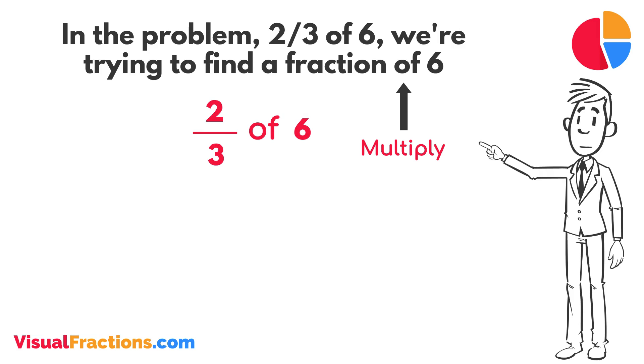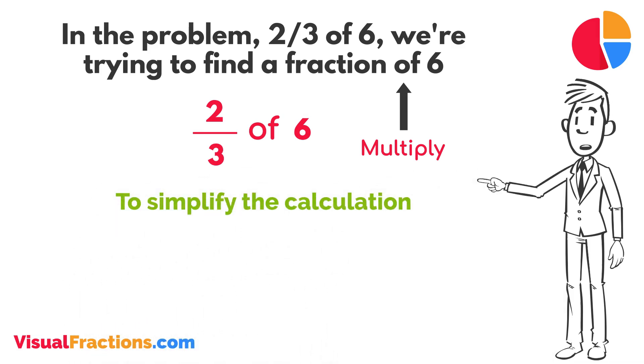To simplify the calculation, we first convert our whole number into fraction form, writing six as six over one. This transformation makes it easier to work with our numbers as fractions.